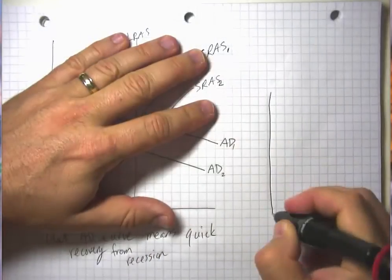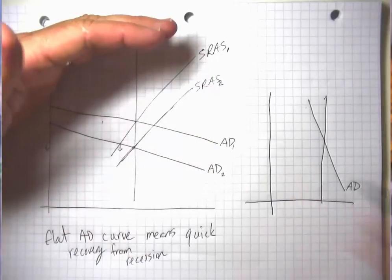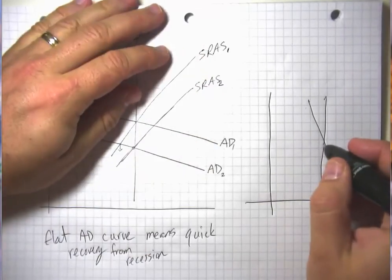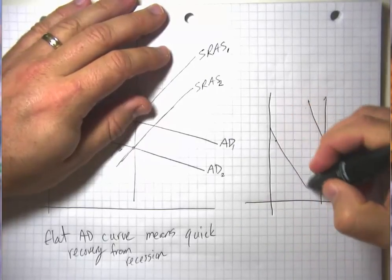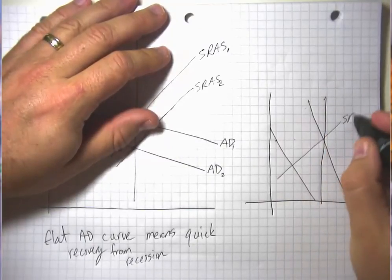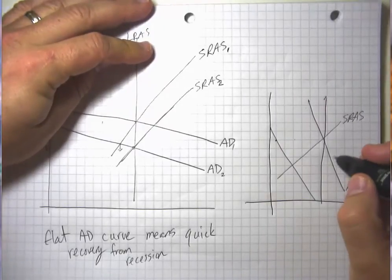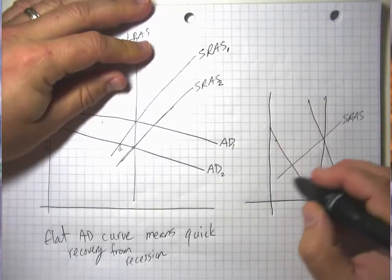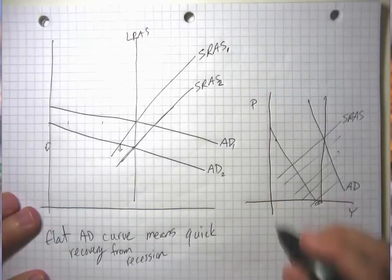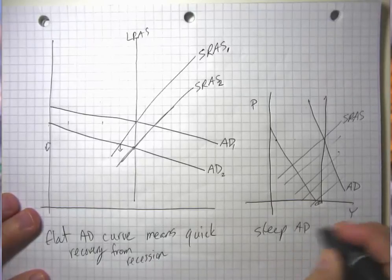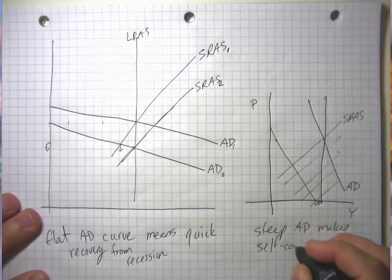On the other hand, if I had drawn this with a steep aggregate demand curve, and let's suppose I shift it even five boxes left, then we're going to see that the recession is going to be much more drastic. It's going to require a heck of a lot of price adjustment to get all the way back down to our normal level of GDP. So a steep aggregate demand curve makes the economy self-correction mechanism slow and difficult.